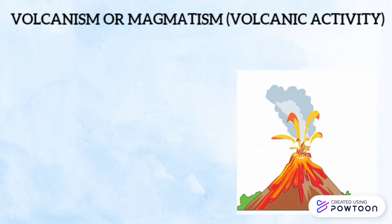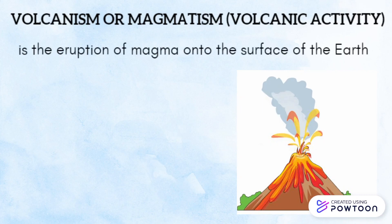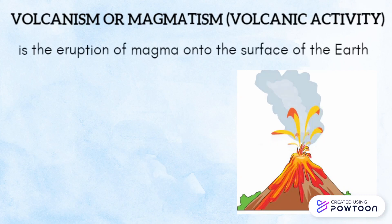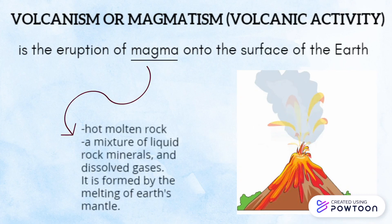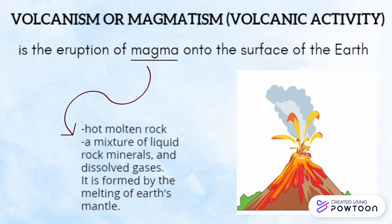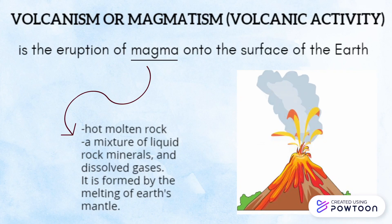Volcanism, or magmatism, is the eruption of magma onto the surface of the Earth. Magma is a hot molten rock — a mixture of liquid rock, minerals, and dissolved gases. It is formed by the melting of the Earth's mantle.